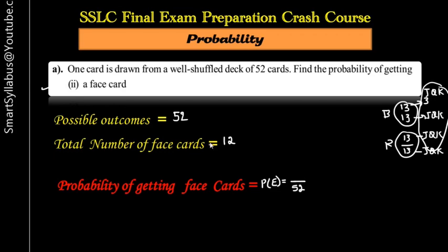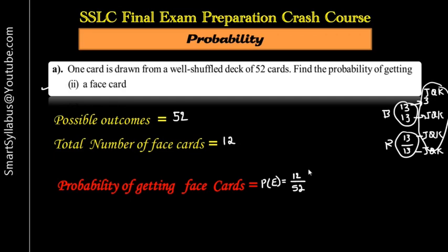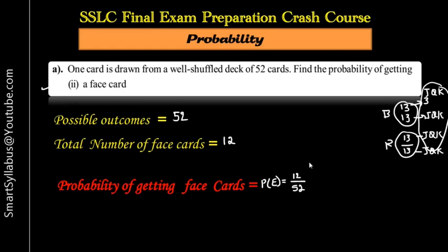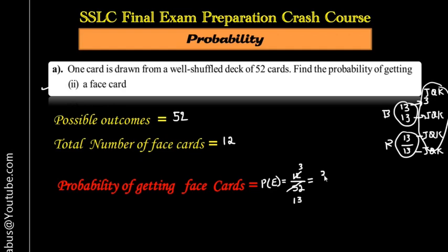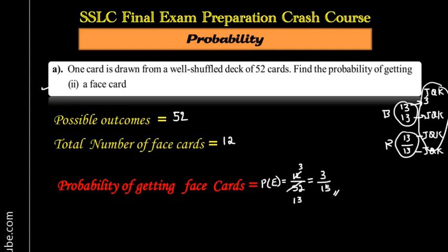Probability of getting a face card: P(E) = 12/52. Simplifying — divide both by 4: 12÷4=3, 52÷4=13. Final answer is 3/13. We cannot divide further. Once again the answer is less than one. This is the probability of finding a face card.